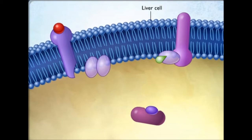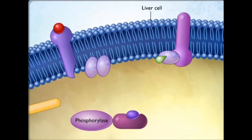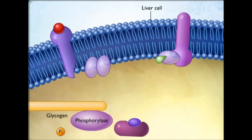In liver cells, protein kinase A phosphorylates and thereby activates another enzyme called phosphorylase kinase. This converts glycogen into glucose 6-phosphate. The glucose 6-phosphate is then converted into glucose.